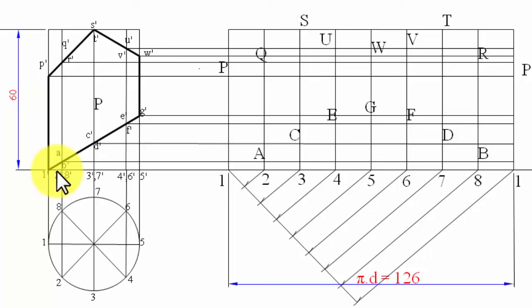And finally, let me close this. Join all the points with the help of a smooth curve. And there you have it. The development of this hollow cylinder.